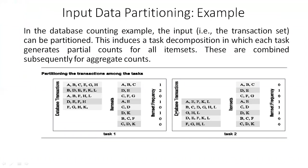Now let's see an example using database transactions. This is the same example we discussed in output data decomposition, where the focus was on the output atom frequency set. Now our main focus is on input data partitioning. In a database counting example, the input transaction set can be partitioned. This induces a task decomposition in which each task generates partial counts for all atoms. These partial counts are then combined to aggregate the total count.